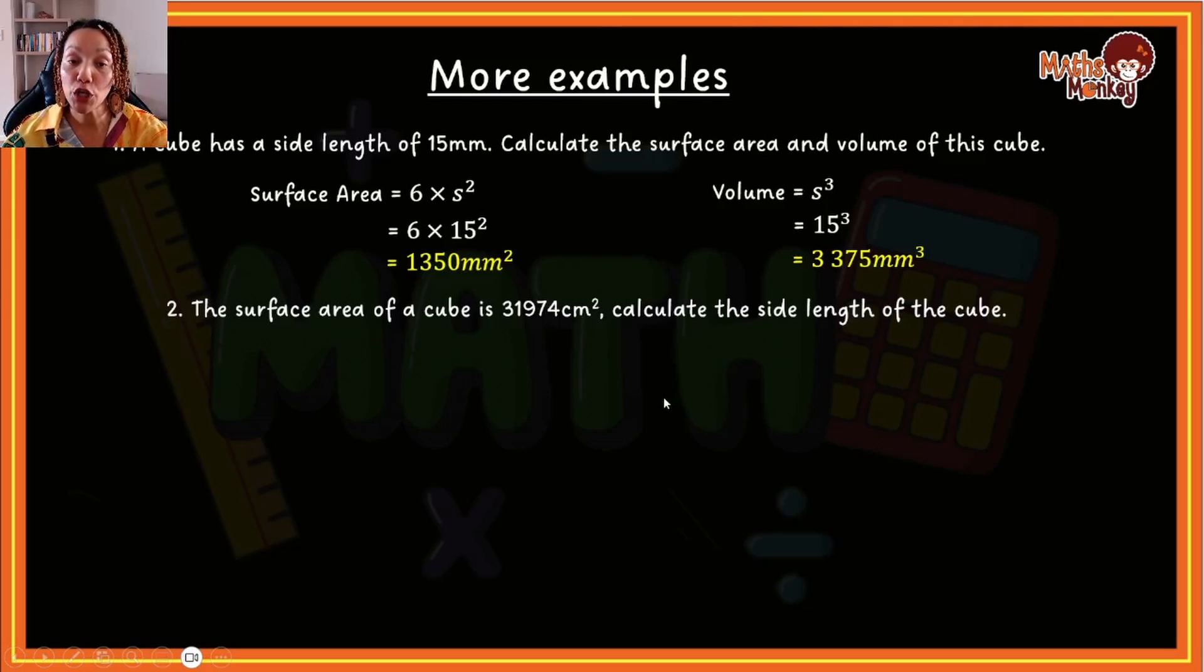The surface area of a cube is 31,974 centimeters squared. Calculate the side length of the cube. So in this question, instead of giving you the side and asking you to calculate the surface area, they are giving you the surface area and asking you to work back. So this is where you will apply your equations rules.